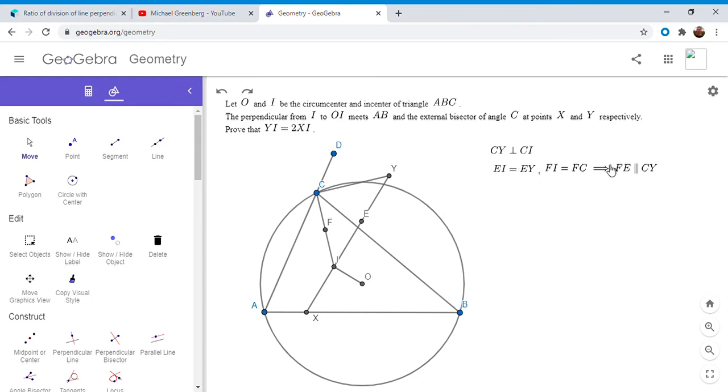So since E is the midpoint of YI, and F I denoted the midpoint of CI, then EF has to be parallel to CY. So I just wrote that out here, EI equals EY, FI equals FC. So FE has to be parallel to CY. And since CY is perpendicular to CI, EF also has to be perpendicular to CI.